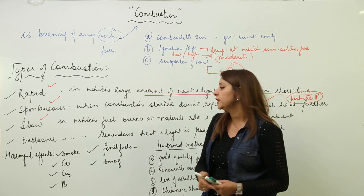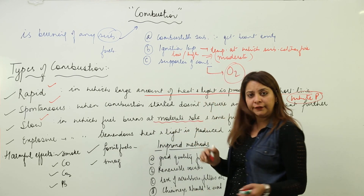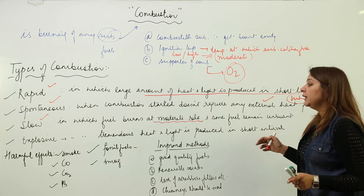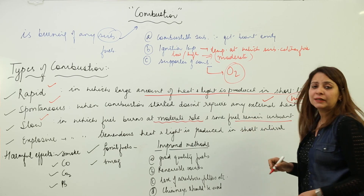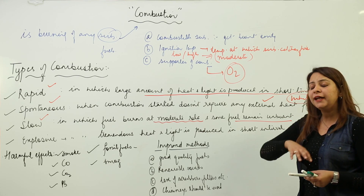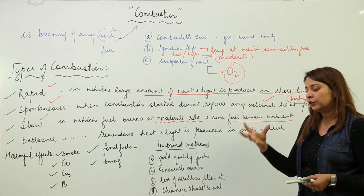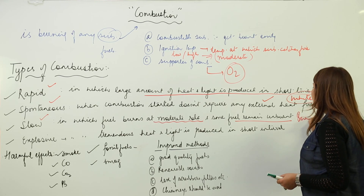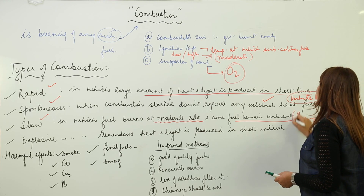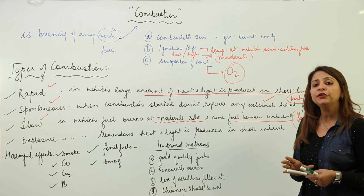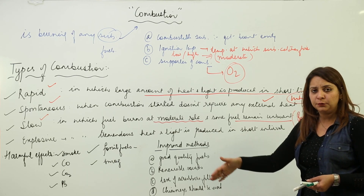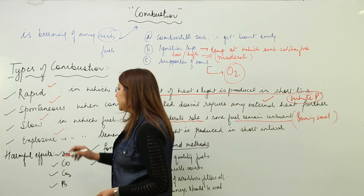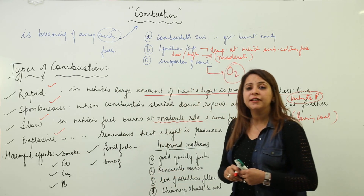Slow combustion, as the name suggests, occurs at a very slow or moderate rate — neither too fast nor too slow. In slow combustion, some of the fuel remains unburnt; the fuel doesn't get completely burnt. For example, when burning coal, combustion occurs at a moderate rate and some coal is left behind unburnt.